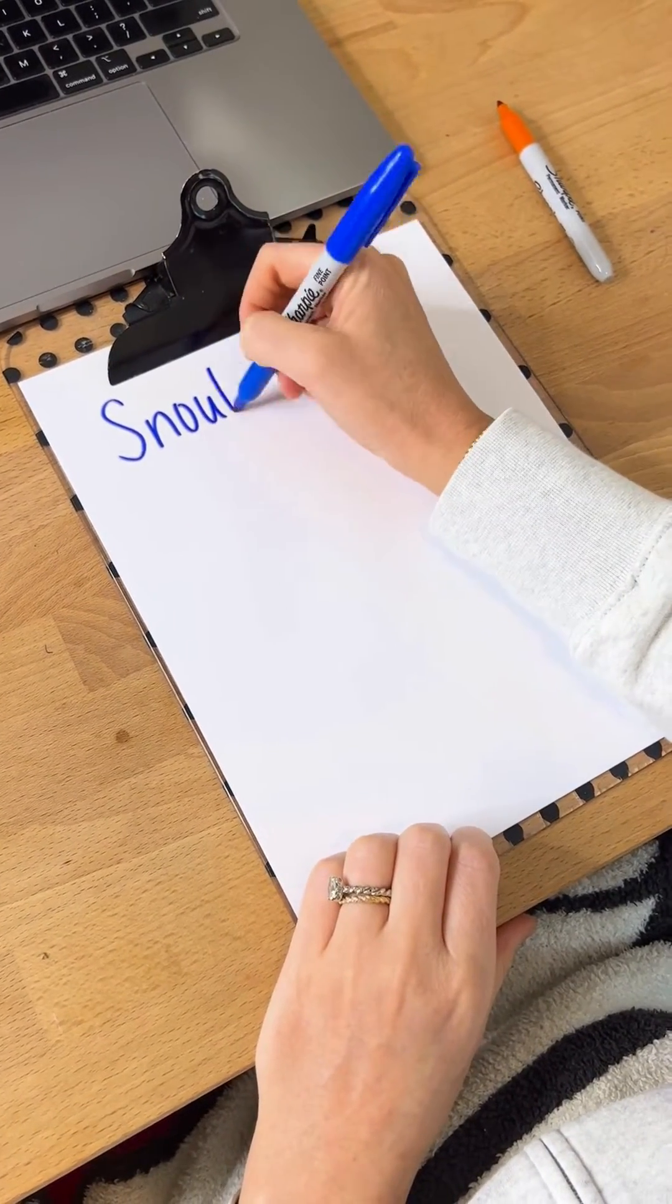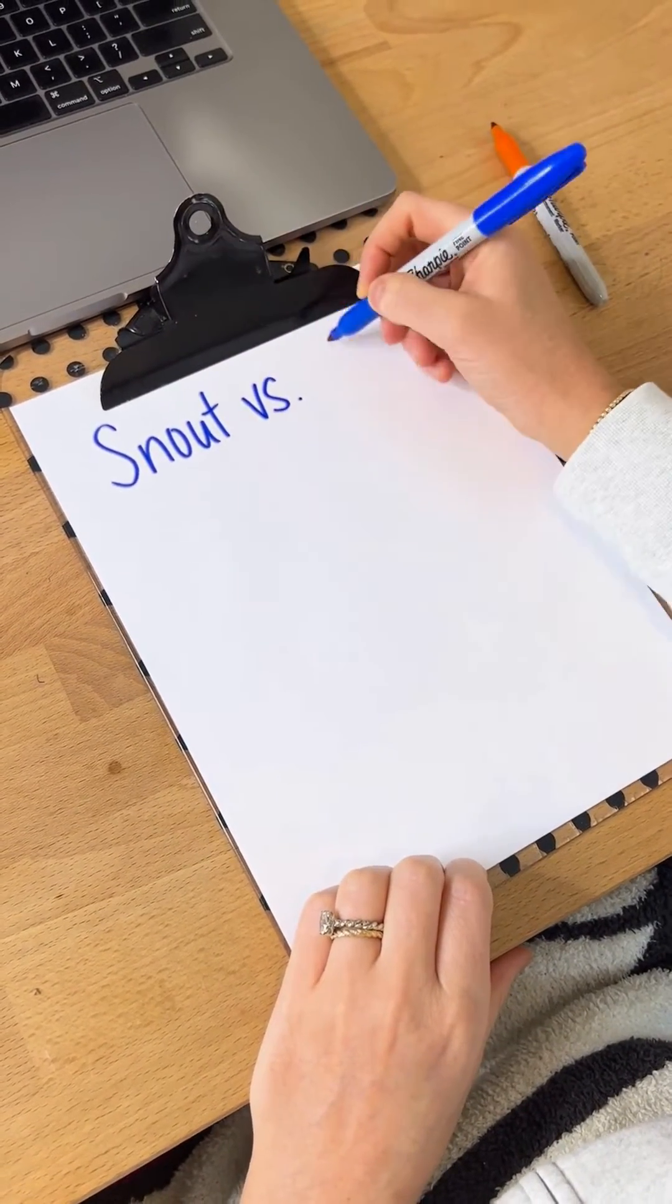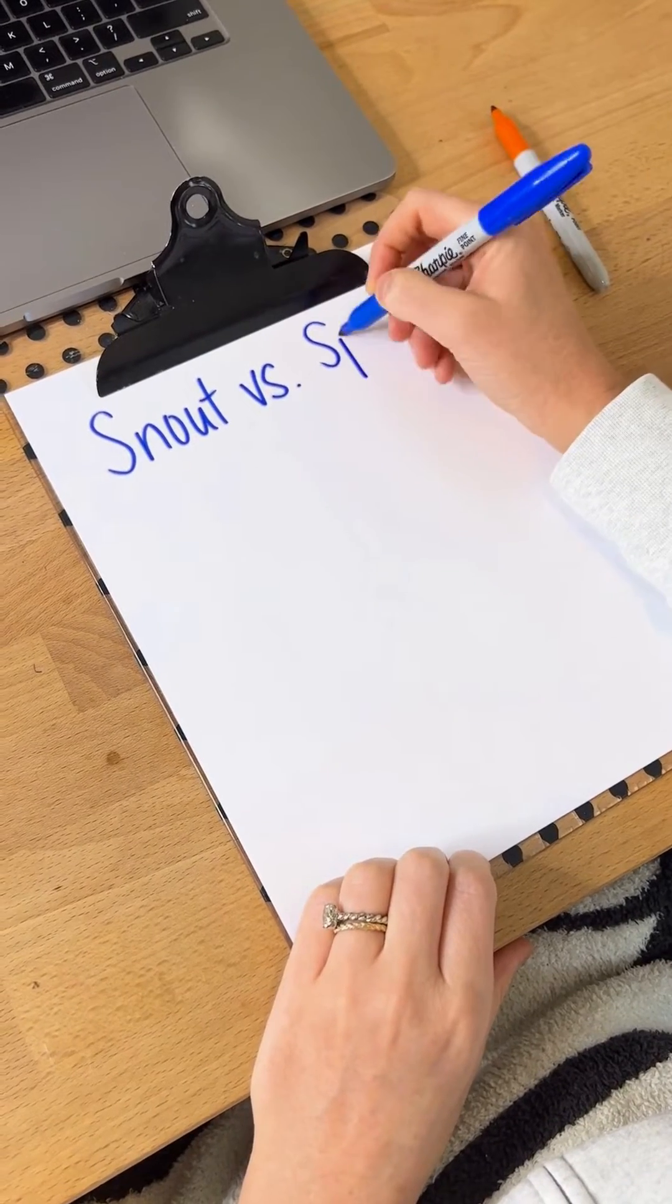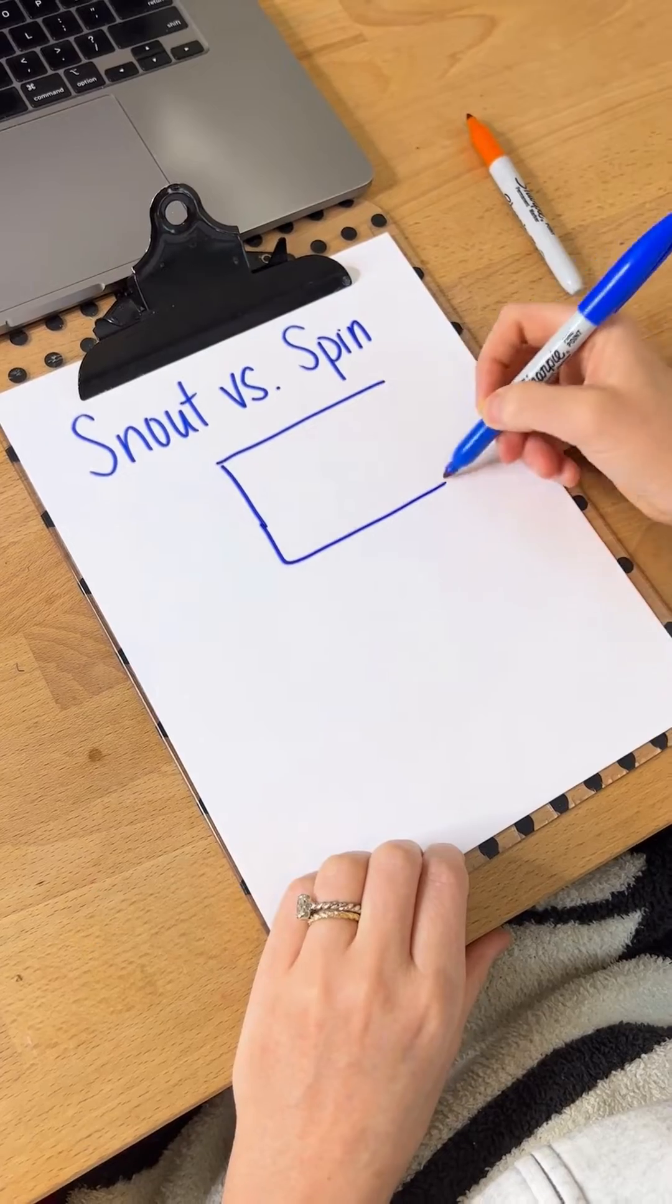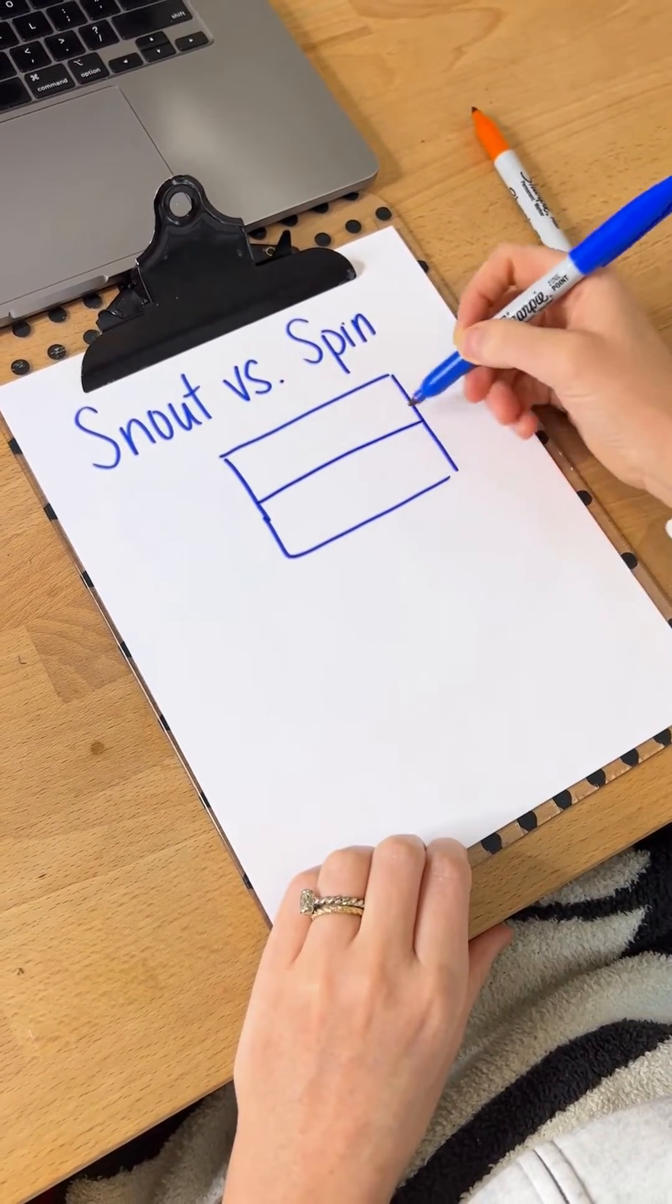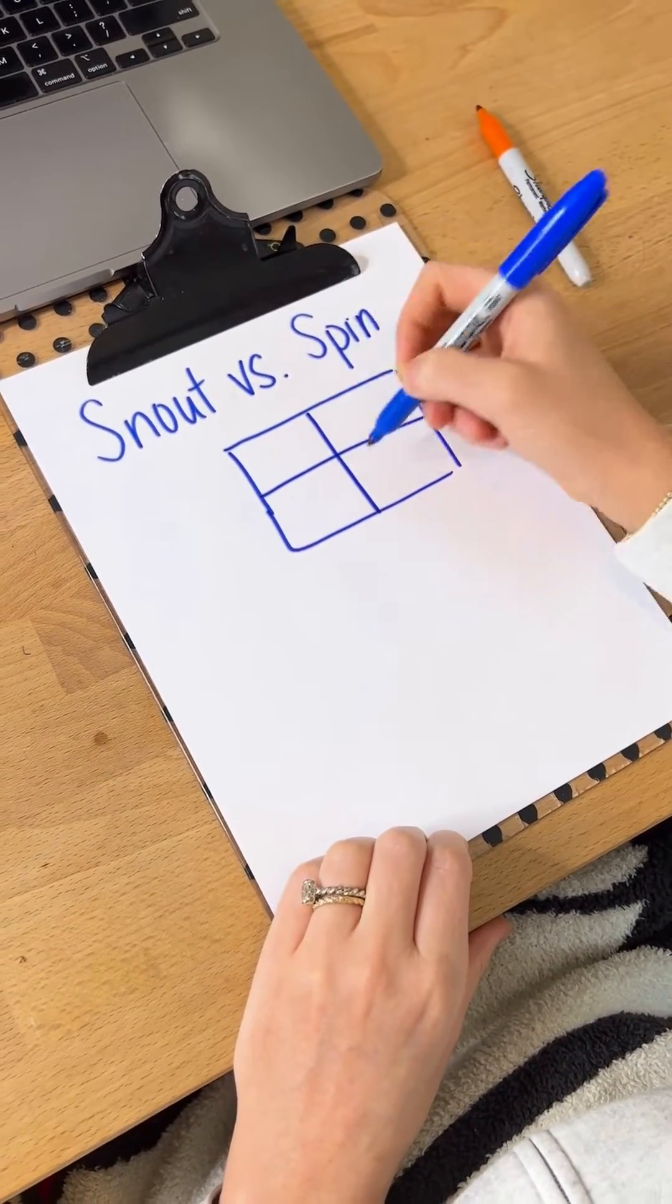Let's explain a deeper understanding of the acronym SNOUT versus SPIN so that you truly understand what these terms mean. To do this, you're going to draw a box with four squares.